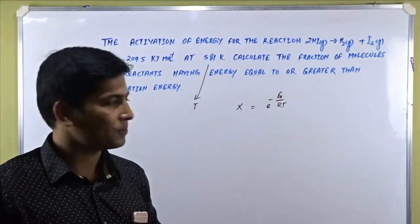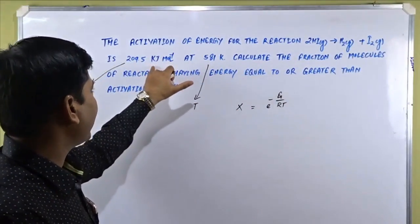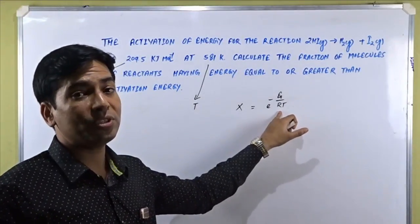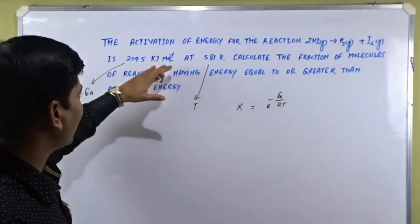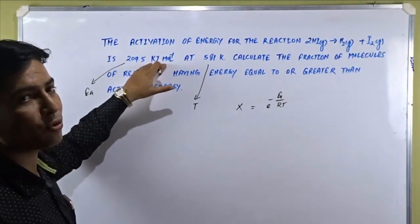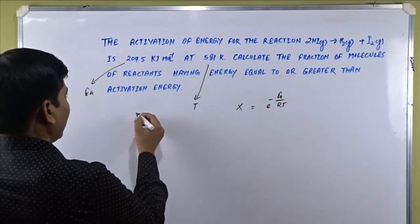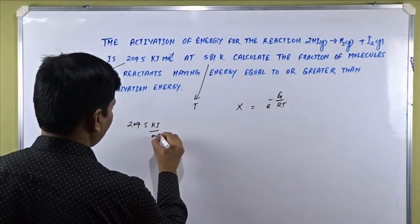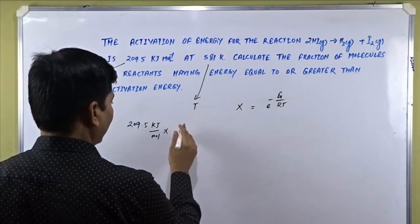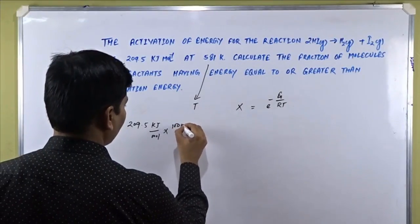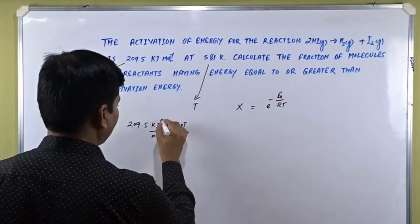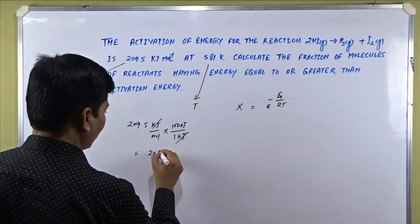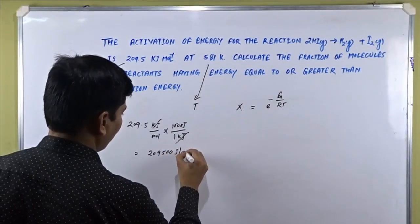In this formula, we can plug in Ea, T, and R values. The Ea value is given in kJ per mole, while R is used in joules per mole K, so we convert Ea from kJ per mole to joules per mole. We have 209.5 kJ per mole multiplied by 1000 joules per kJ. The kJ units cancel, giving us 209,500 joules per mole.